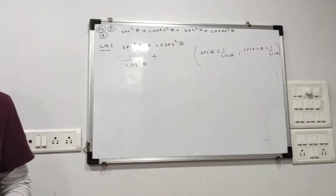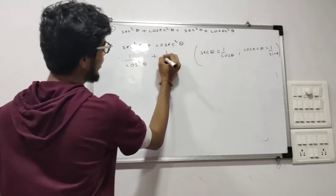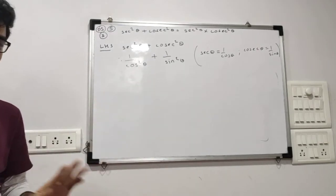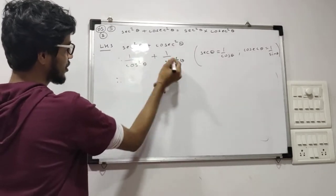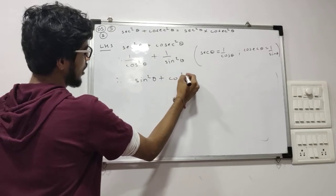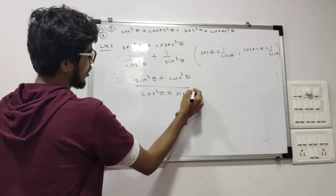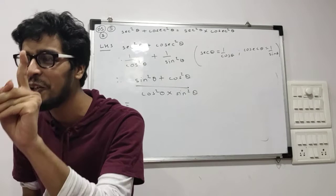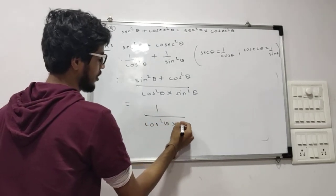So sec squared theta is 1 upon cos squared theta, and cosec squared theta is 1 upon sin squared theta. Now can we simply add them? The bases are not the same — we have sin and cos — so what we will do is cross multiply. Therefore: 1 times sin squared theta is sin squared theta, plus 1 times cos squared theta is cos squared theta, all over cos squared theta times sin squared theta. Now if you recollect, sin squared theta plus cos squared theta is equal to 1.